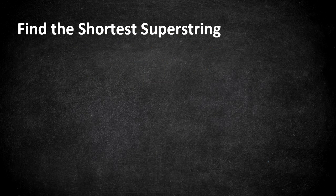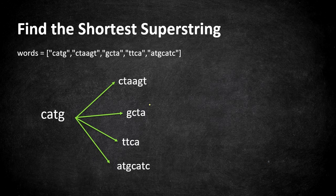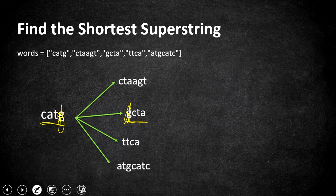How are we going to perform the merge operation? We take the first string and compare it with the rest of the strings, finding suffixes and merging. For example, consider string C-A-T-G and G-C-T-A — you can merge them by one character. G and G are common here, so you put only one G and ignore the other G. That becomes C-A-T-G-C-T-A, covering both strings in one particular string.